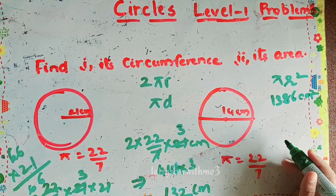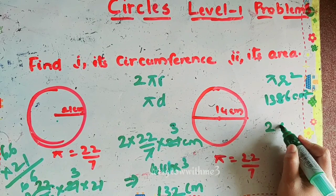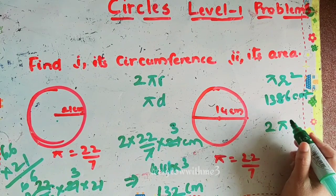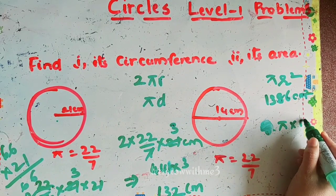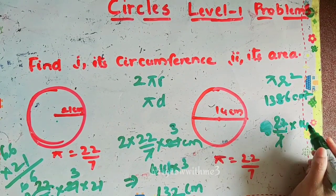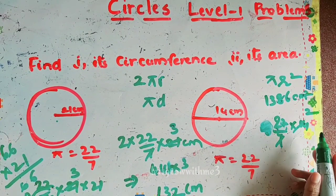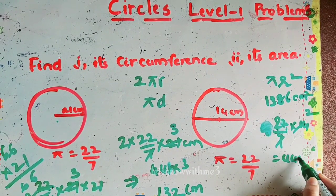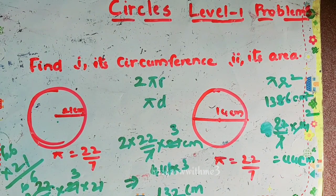Next question: here we are given the diameter, d = 14 centimeters. So we use the formula πd instead of 2πr. That gives 22/7 times 14 centimeters. 7 into 14 is 2, then 2 times 22 is 44 centimeters — that is the circumference.